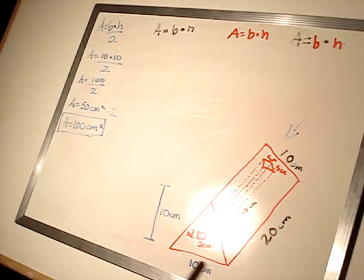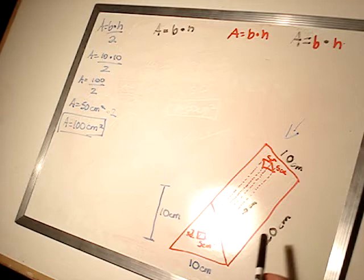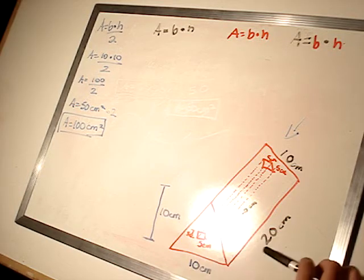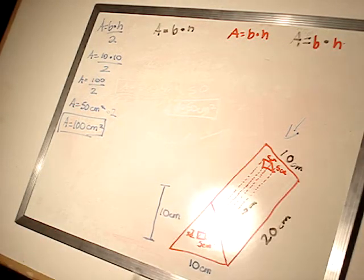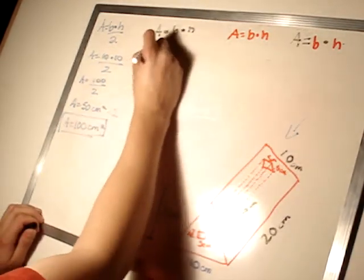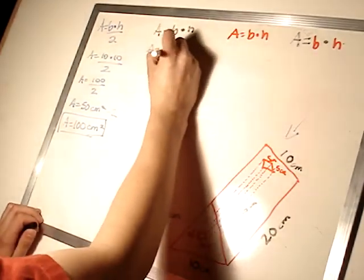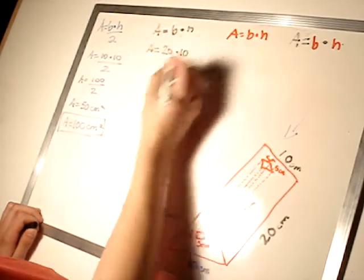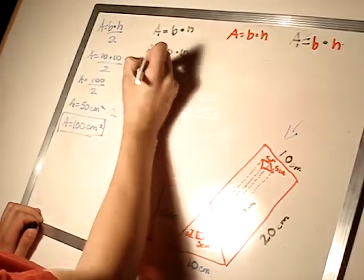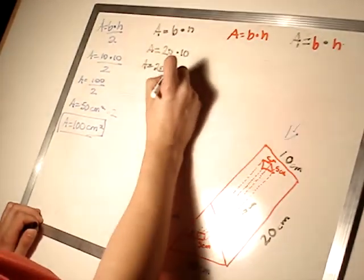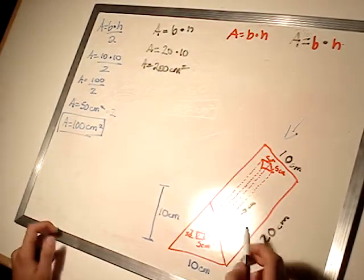Anyway, so now, going to the black side here. So, base times height, right? It's a rectangle. So, area equals base, 20, times height, times 10. Area equals 200 centimeters squared. But there's three. You'll see why.